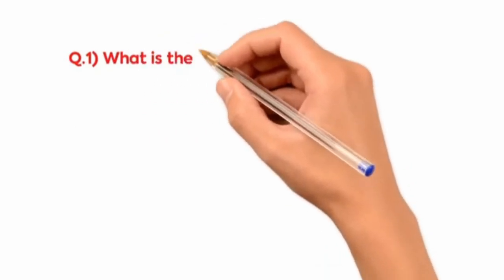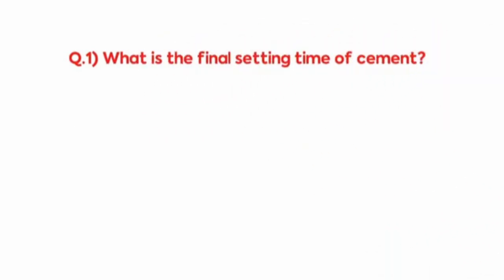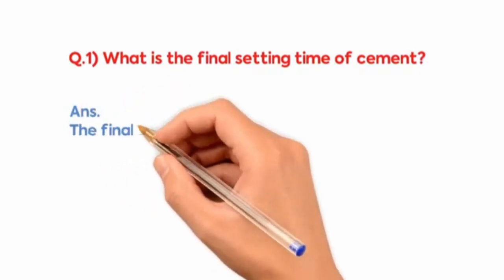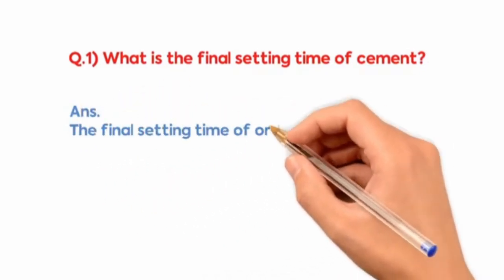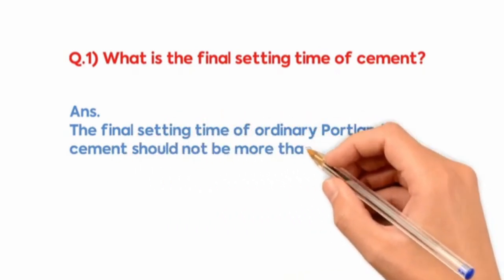What is the final setting time of cement? The final setting time of ordinary Portland cement should not be more than 10 hours.